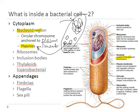Besides plasmids, another important structure is the ribosome. Ribosomes are specified regions where protein synthesis takes place. A bacterial cell contains thousands of ribosomes, and these are smaller than the ribosomes found in eukaryotic cells. This is important when designing drugs — antibiotics are often targeted to break down bacterial ribosomes since they produce proteins essential for bacterial survival. Because bacterial ribosomes differ from eukaryotic ones, drugs can target bacteria without harming the host cell.